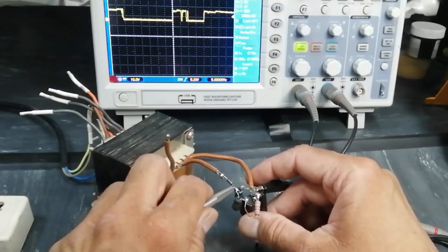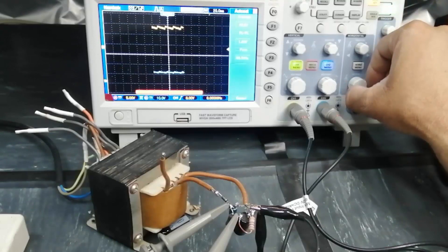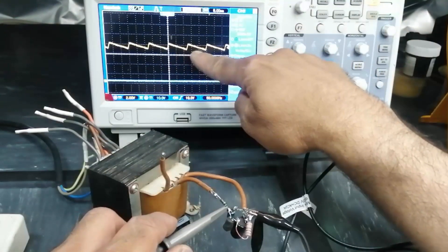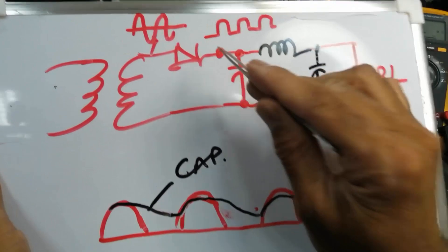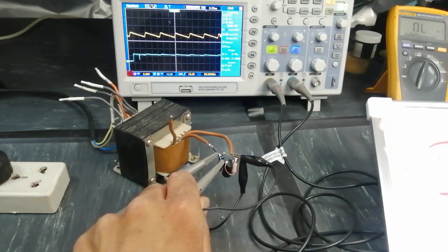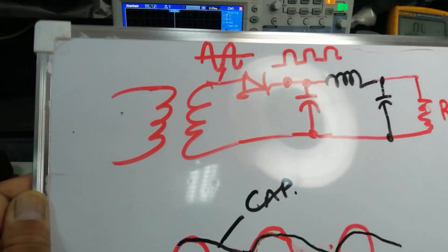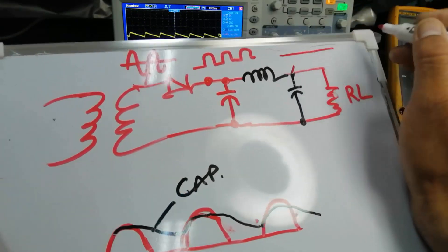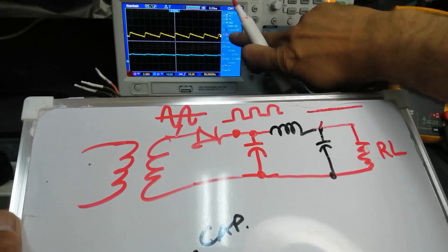Now first we will see: before the inductor, and after the inductor. This is the output of the rectifier on the first capacitor — at the first capacitor we are taking this voltage. After the LC filter, this is our output level. The output is now smooth, and at this point we have very minor ripples — very minor ripples. So this is the output of the LC filter.